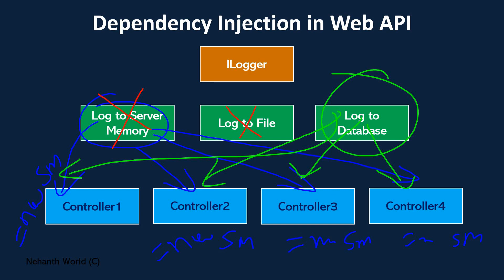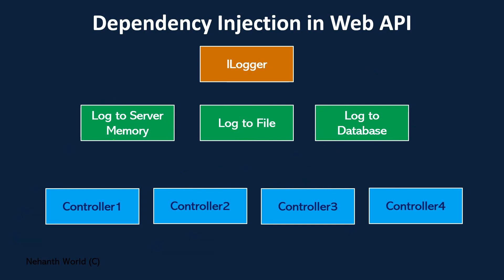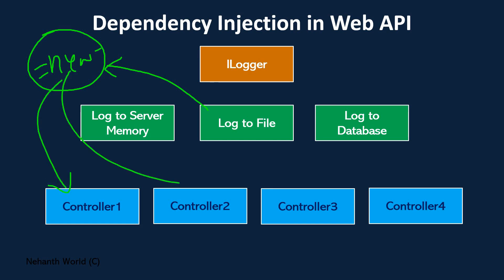So what is the solution for this? The solution is a loosely coupled way of consuming classes. We already discussed the tightly coupled mechanism — so what is the loosely coupled mechanism? Loosely coupled means there is a common place where you create the object once. You create the object in that common place, and then use that single object across controller 1, controller 2, controller 3, controller 4, all the way to controller 50 or 100. That is the loosely coupled mechanism of consuming a class.